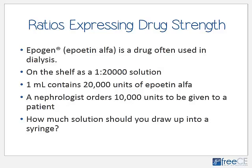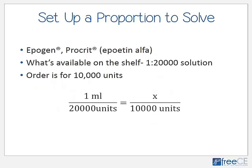Let's look at an example of ratios expressing drug strength. Epoetin alfa (Epogen) is often used in dialysis treatment for patients with kidney failure. On the shelf you can find it in several strengths — one is expressed as a ratio 1:20,000, meaning 1 milliliter to 20,000 units. A nephrologist orders 10,000 units to be given to a patient. How much solution should you draw up into a syringe?